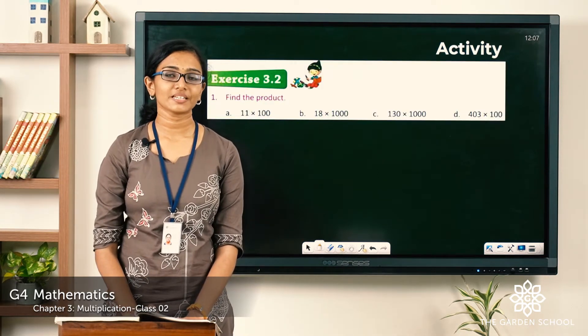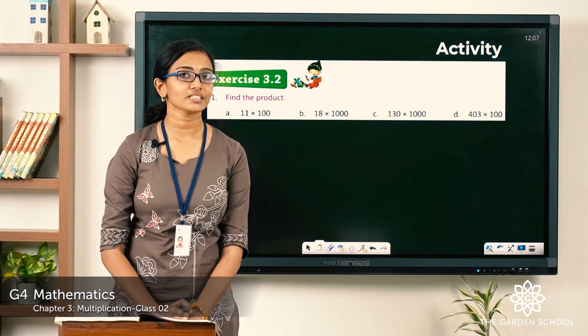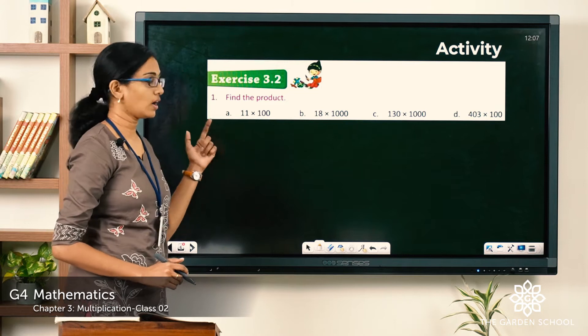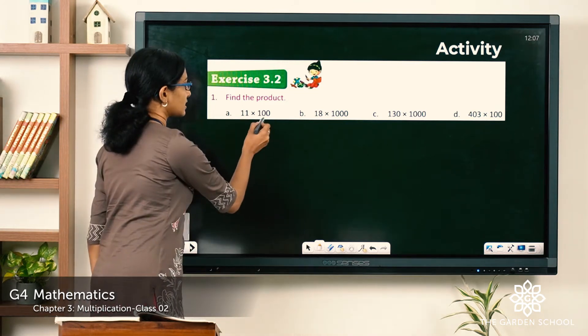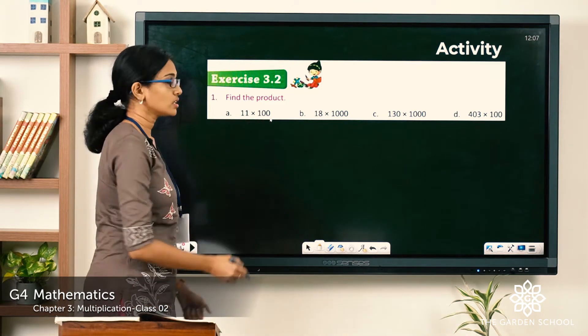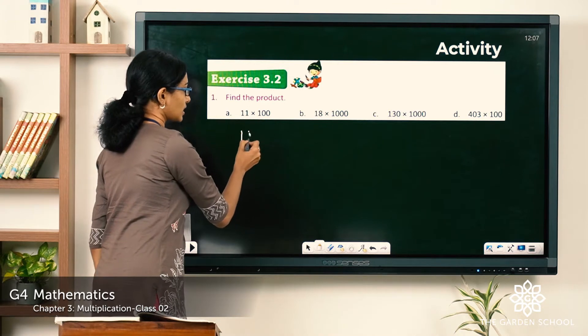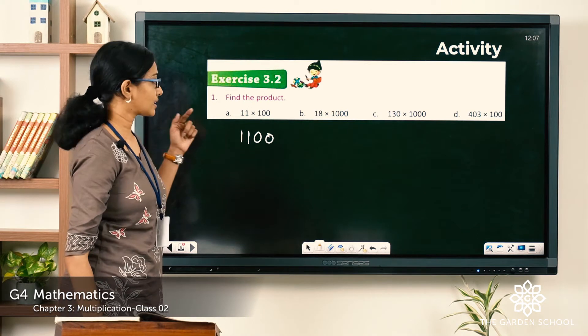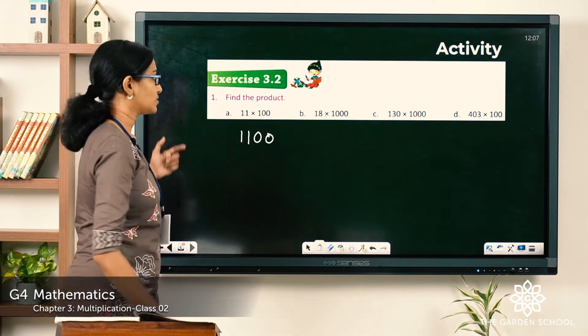Hope you finished writing the products. Now let's check the answers. The first question: find the product of 11 into 100. It is multiplication by 100, so there are two zeros. Inserting two zeros to the right of 11 gives you the product 1100. So that was A.